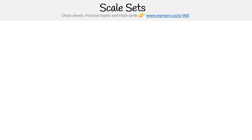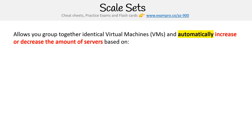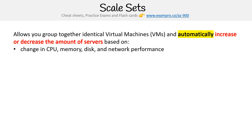Hey, this is Andrew Brown from ExamPro, and we are looking at scale sets. This allows you to group identical virtual machines and automatically increase or decrease the amount of servers based on the change in CPU, memory, disk, or network performance, or on a pre-defined schedule. When we talk about elasticity, we're talking about using scale sets.